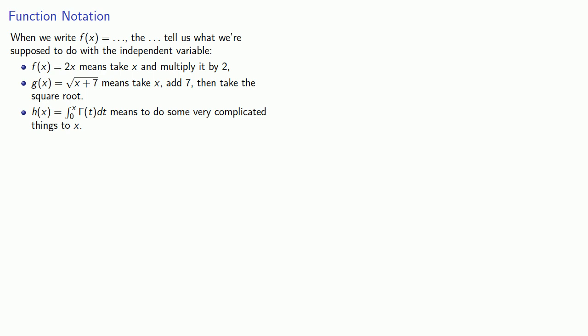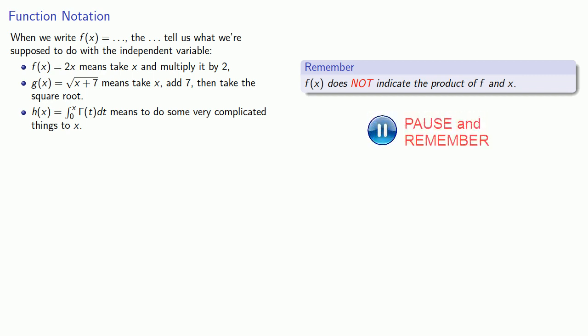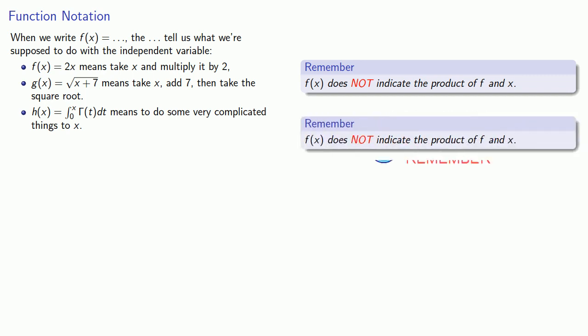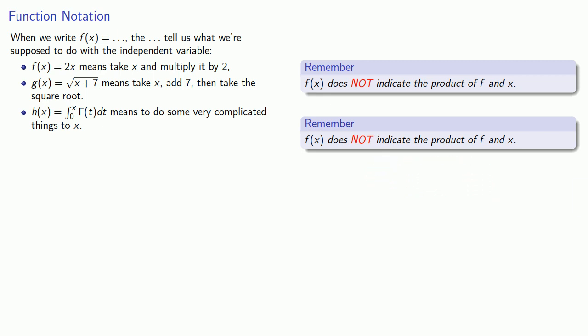And there are three important things to remember about function notation. First, f of x does not indicate the product of f and x. Even more importantly, f of x does not indicate the product of f and x. But the most important thing to remember about function notation is that f of x does not indicate the product of f and x.